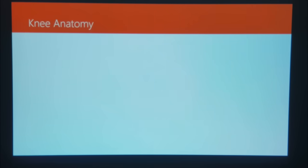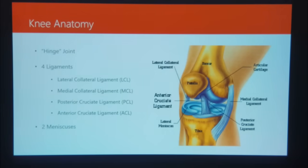Before we get talking too much about ACLs, I want to cover the anatomy of the knee first. The knee is essentially a hinge joint, meaning it's for the most part on a fixed plane moving forward and backwards. There's not a lot of lateral motion, not a lot of rotational motion. But I put that in quotation marks because it doesn't really follow exactly the rules of what you'd consider a true hinge joint.